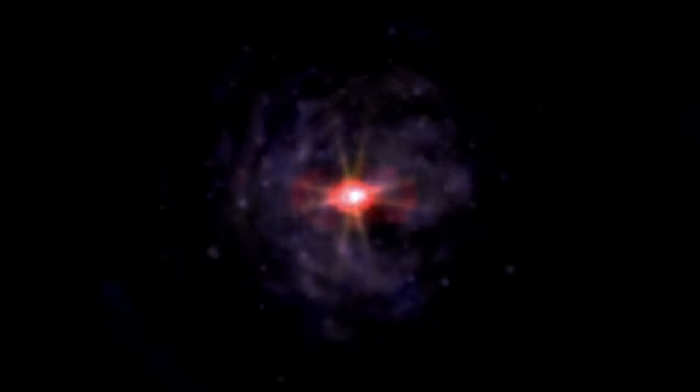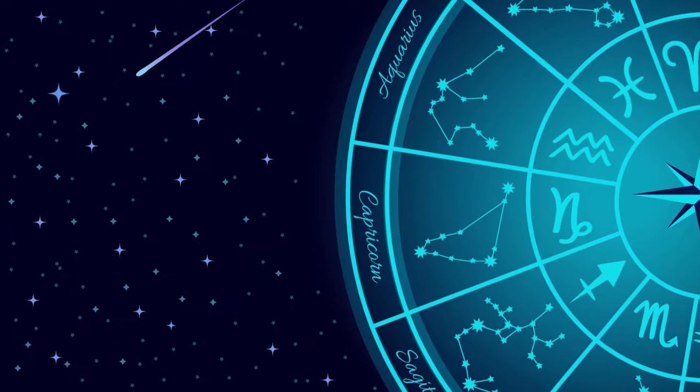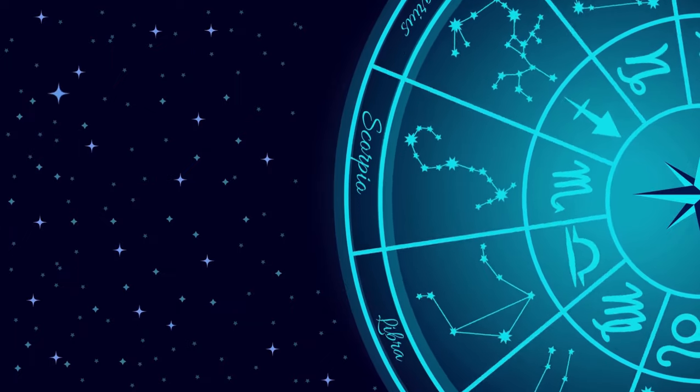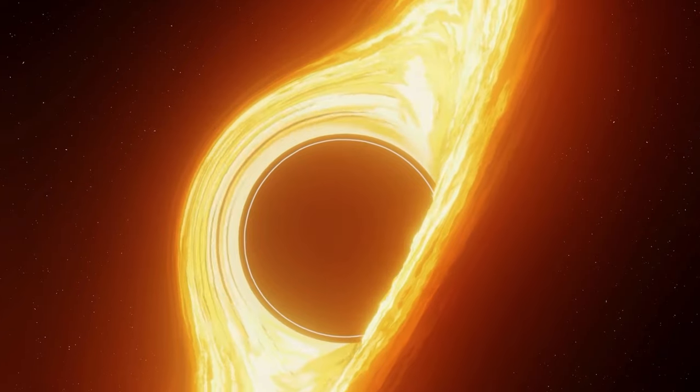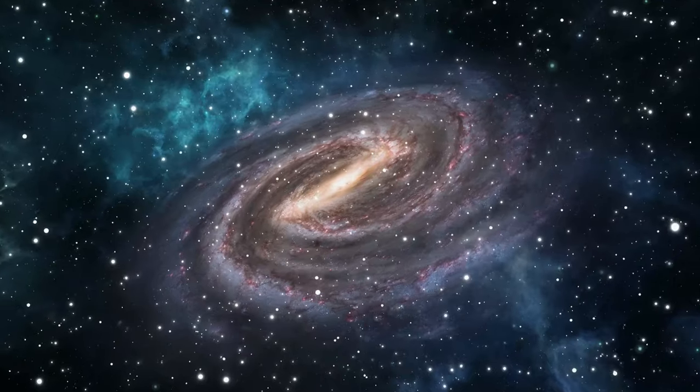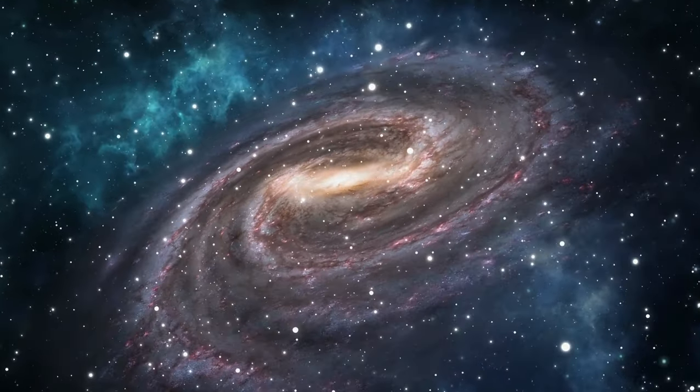However, there is a possibility that Oumuamua is a byproduct of a collision between two objects in a distant star system. The resulting debris could have been flung into interstellar space, with Oumuamua being one of the fragments caught in our solar system's gravitational pull. Without further evidence, these theories remain speculative. Detailed analysis of Oumuamua's composition, isotopic ratios, and surface features could provide clues about its origin and shed light on the mechanisms involved in its peculiar spin and movement.